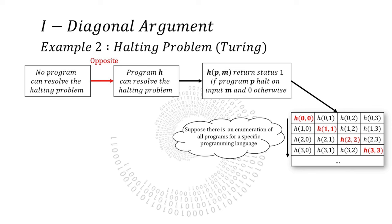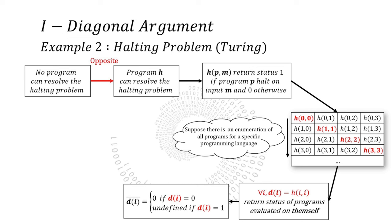So we define the diagonal term D which is the result of programs evaluated on themselves. But we also define counter D which returns the inverse status of D. Now what can we say about counter D evaluated on itself? Does it halt?